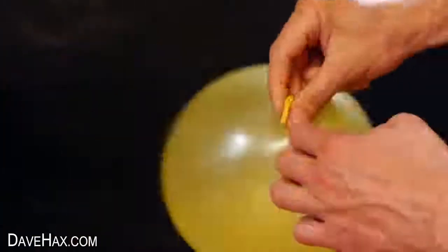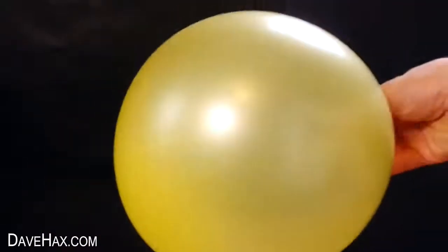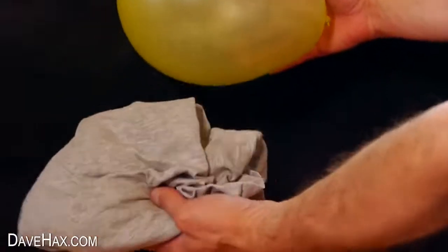Then inflate a balloon and tie it off. We're going to be using this balloon to pick up the ground pepper without touching it. To do this we first need to charge the balloon with static electricity. So I'm rubbing my balloon on this cotton t-shirt.